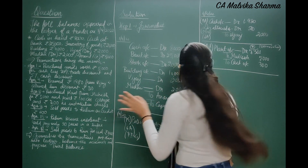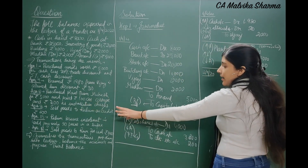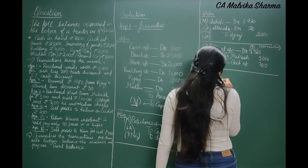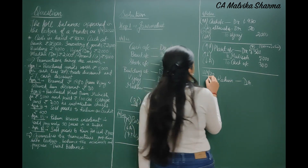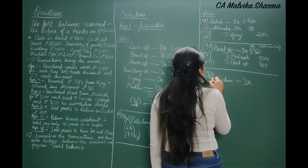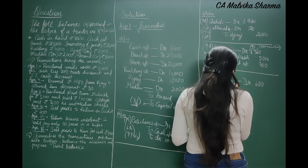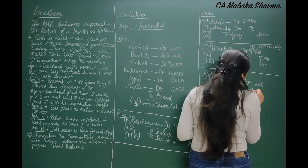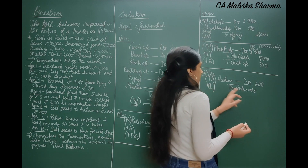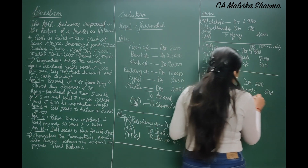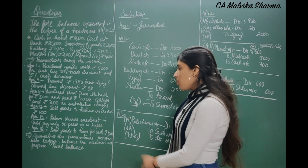Next transaction — April 12: sold goods to Raheem on credit Rs. 600. Journal entry: Raheem account debit Rs. 600 (increase in asset — Raheem is our debtor); Sales account credit Rs. 600 (increase in income). This is the journal entry for credit sales to a particular debtor: debtor debit, to sales.